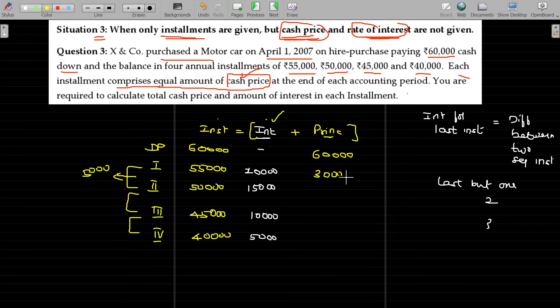The cash price in each and every installment remains the same. Now the overall installment value here - how much is this? 2 and a half lakhs. So 2 and a half lakhs is the total installment.